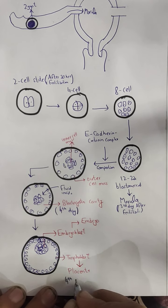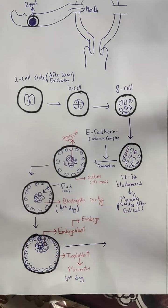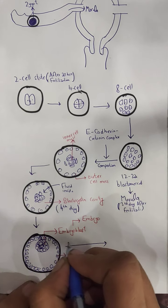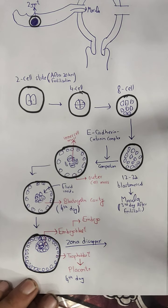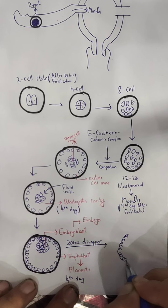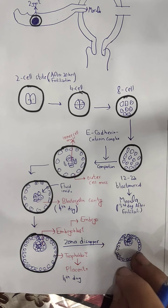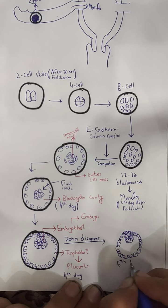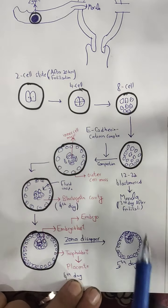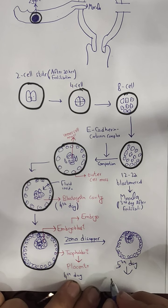This is approximately the 4th day. Now what is going to happen is that the zona pellucida is going to disappear so that the size can increase. The zona pellucida limits the size, and when it is removed, the size increases. So the zona pellucida disappears — the zona pellucida will be removed.